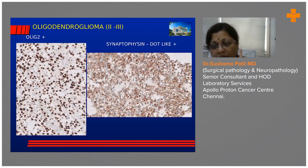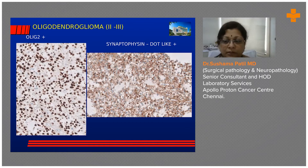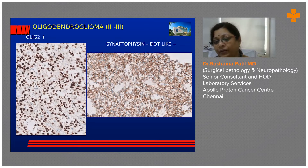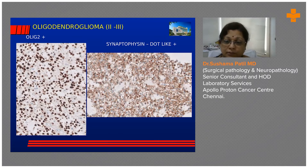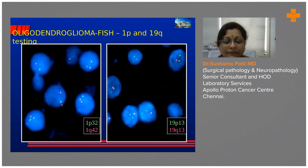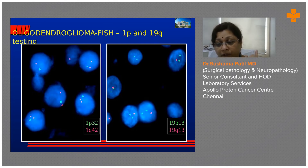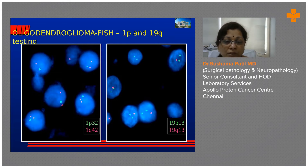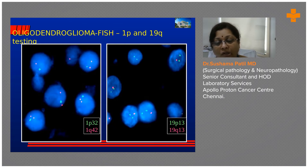Whenever I see that dot-like synaptophysin positivity in an oligodendroglioma, I am 100% certain it will be 1p/19q co-deleted. I don't fully know the correlation, but it consistently predicts co-deletion. If the FISH lab tells you it's negative, go discuss it with them — something is wrong with their system. On the FISH slide, the left side shows 1p and 1q: there are two reference probes but only one green signal for the test probe, meaning one 1p signal is lost — so 1p is deleted.